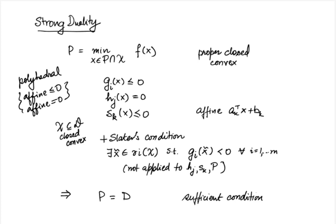As a special case, consider the linear programming problem — that is one where we only have affine objectives and constraints. LPs are convex and Slater's condition does not apply to them because there is no calligraphic X or g_i's. Therefore, strong duality always holds for linear programs.